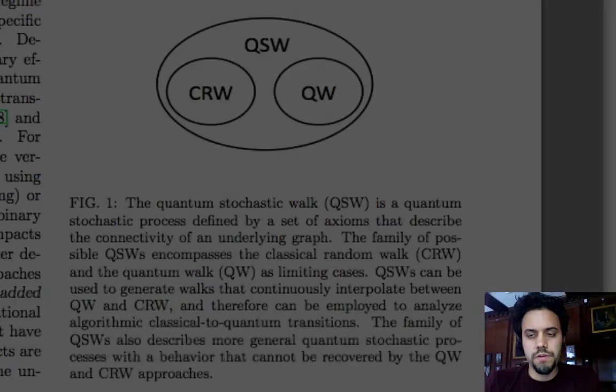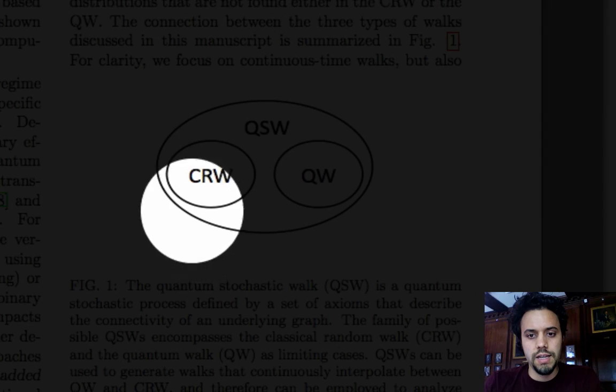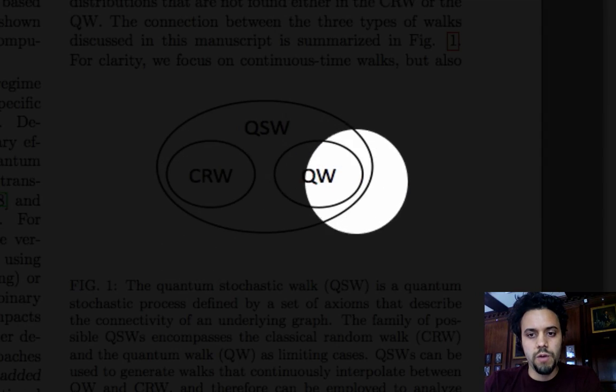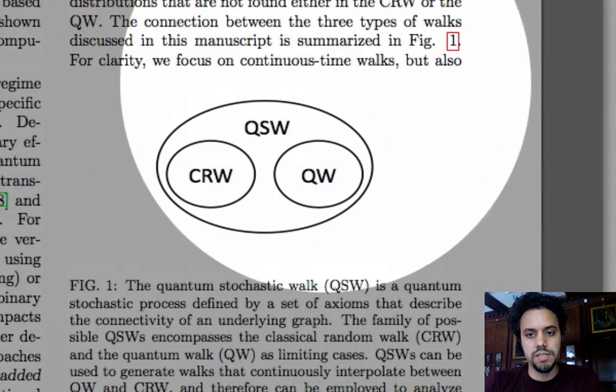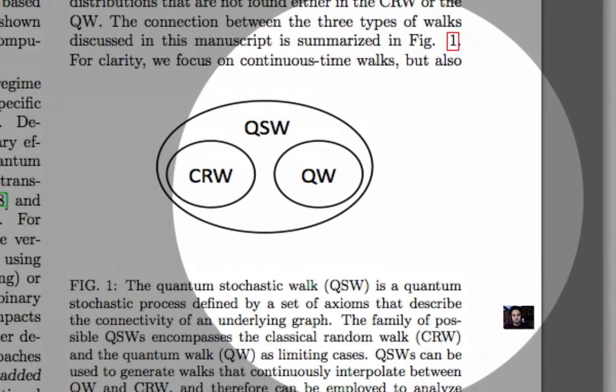The main idea of this paper is that we wanted to consider a classical random walk and a quantum walk as a subclass of a more generalized walk that we call the quantum stochastic walk.